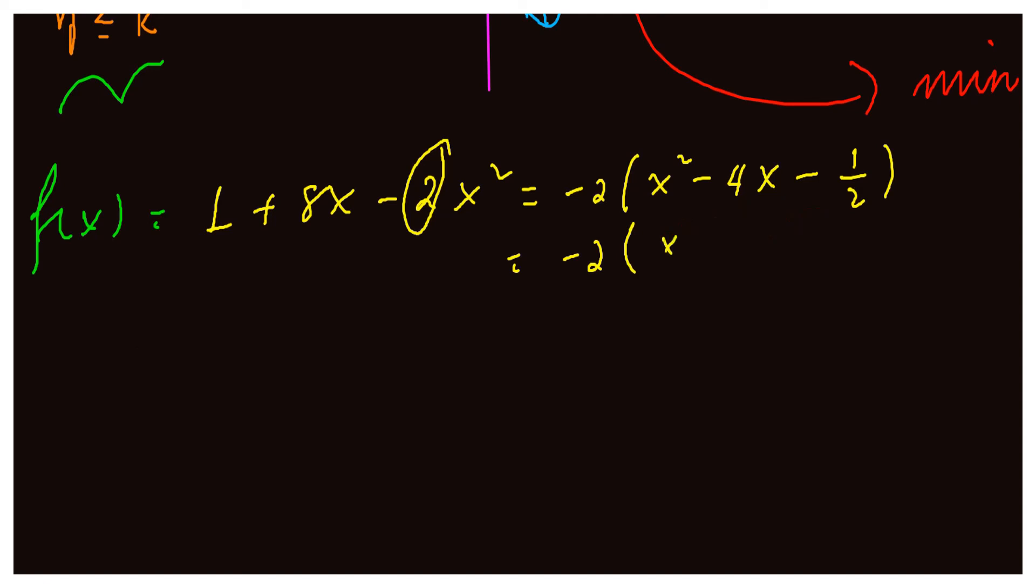Now, x² - 4x, we will complete, minus 1/2. So we will add and subtract to make it a perfect square, so our equation will not be altered.